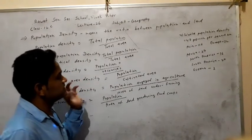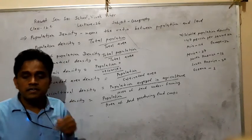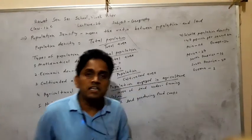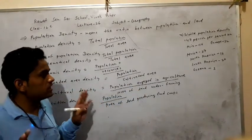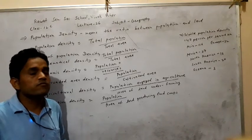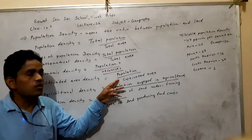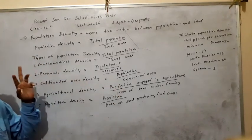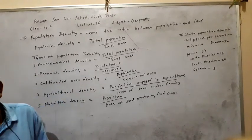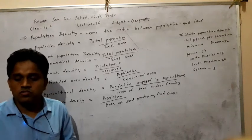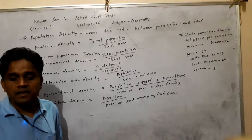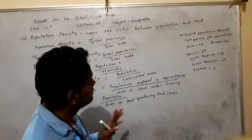Next: cultivated area density. This is the ratio between the total population and the cultivated region. It does not include the total region — only the cultivated region is included, meaning only the land where crops grow. These regions are included in this definition. The ratio between total population and the cultivated region is cultivated area density.